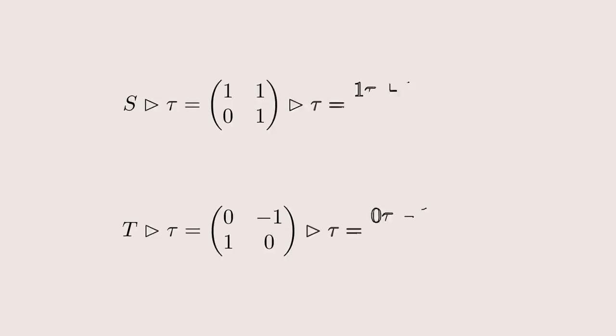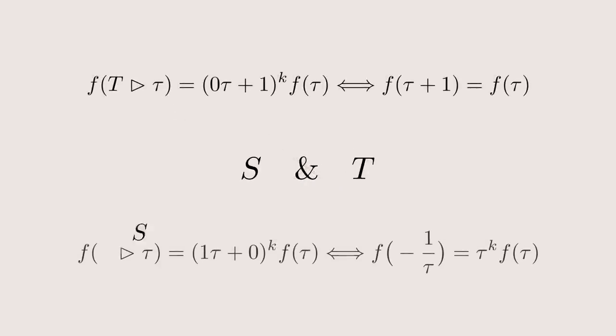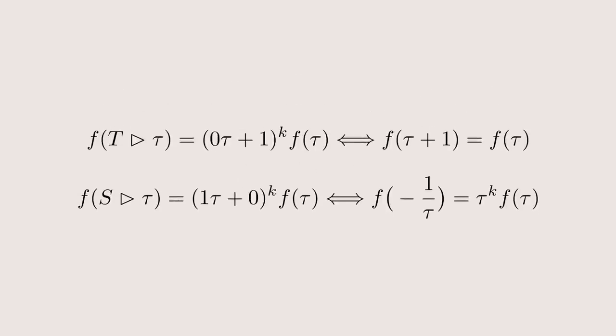The group actions of these two matrices, S and T, are very simple as you can see. Translation and inversion plus mirroring. This massively simplifies the function equation for modular forms. Instead of having to consider every matrix A, B, C, D, we only need to check a function on S and T. For T, we get that the function must be periodic, with period 1. For S, we get this equation containing the weight K. Remember, a modular form only has to satisfy these two equations.